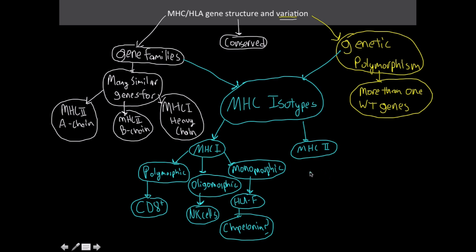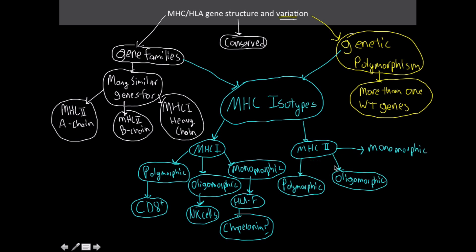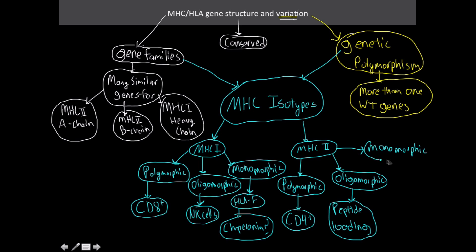For MHC class 2, the polymorphic isotypes are involved in antigen presentation to CD4 helper T cells. The oligomorphic ones are associated with peptide loading. The monomorphic category is not well described in the literature.